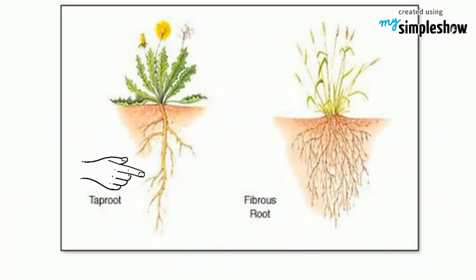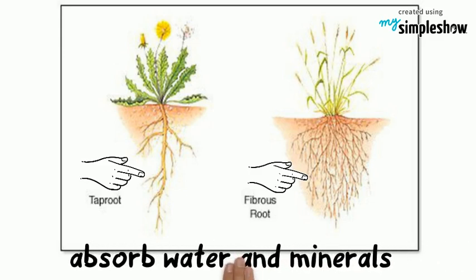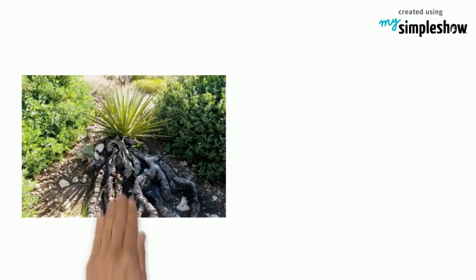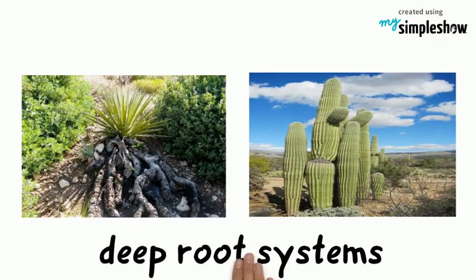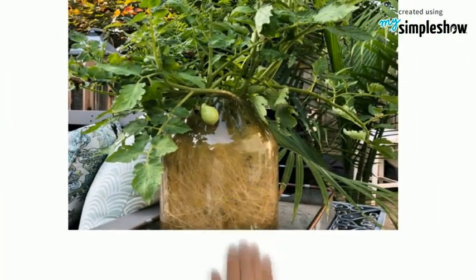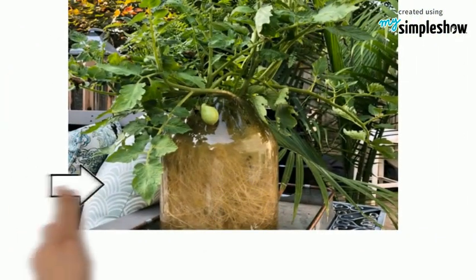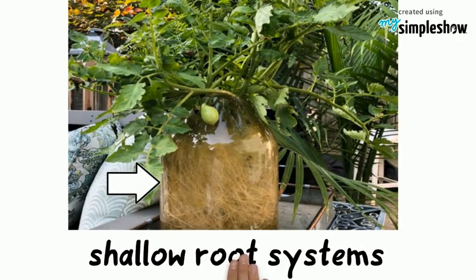Both taproot and fibrous roots have root hairs. These root hairs absorb water and minerals. Plants that grow in dry areas often have deep root systems, like yucca and cactus. Plants that grow in areas with abundant water are likely to have shallow root systems.